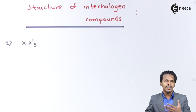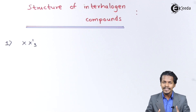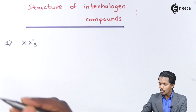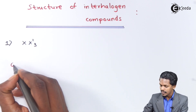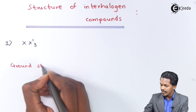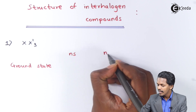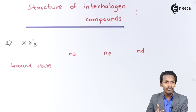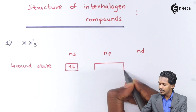Taking the example of ClF₃ — similar to what we discussed in the previous lecture regarding BF₃ — let us discuss the central atom. For the ground state, the orbitals are ns, np, and nd. For a halogen, the valence shell electronic configuration is ns² np⁵.